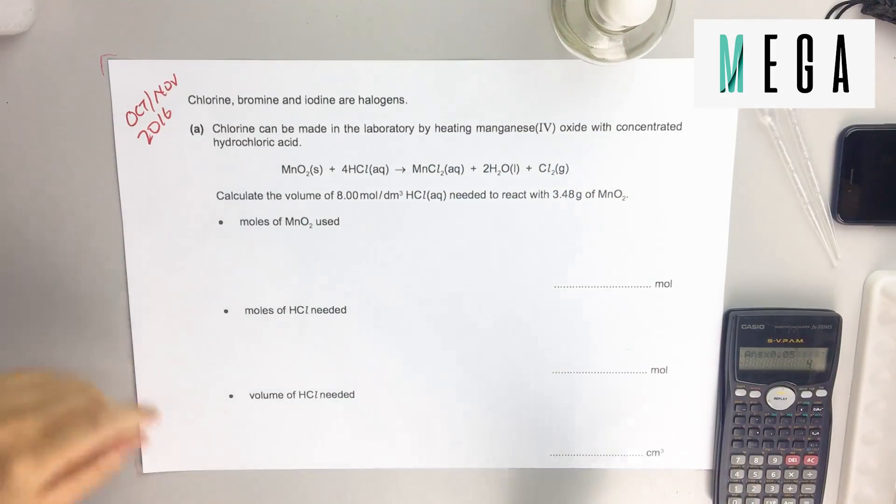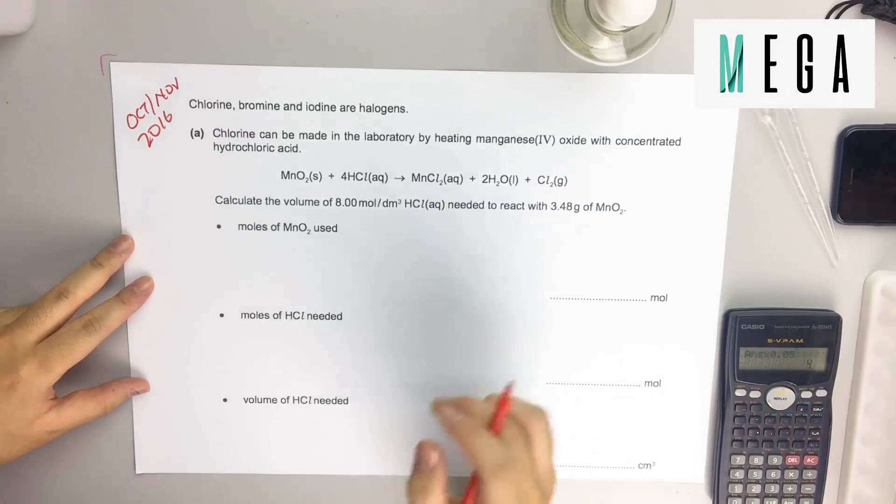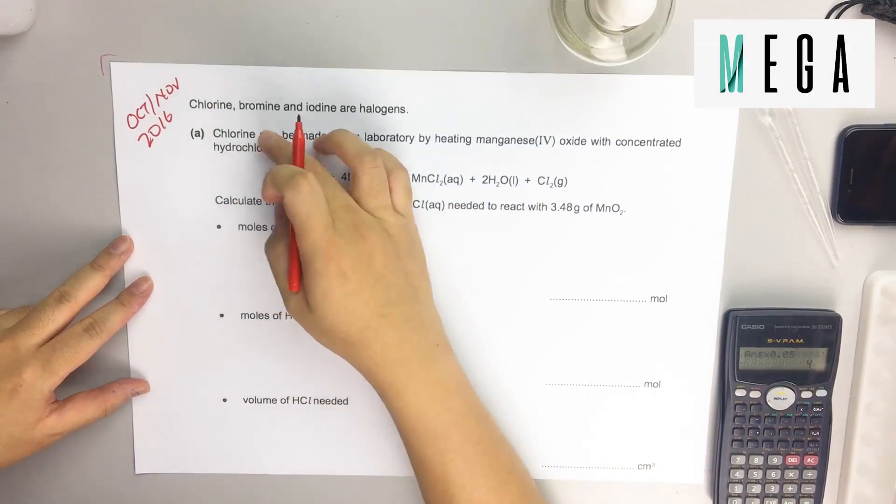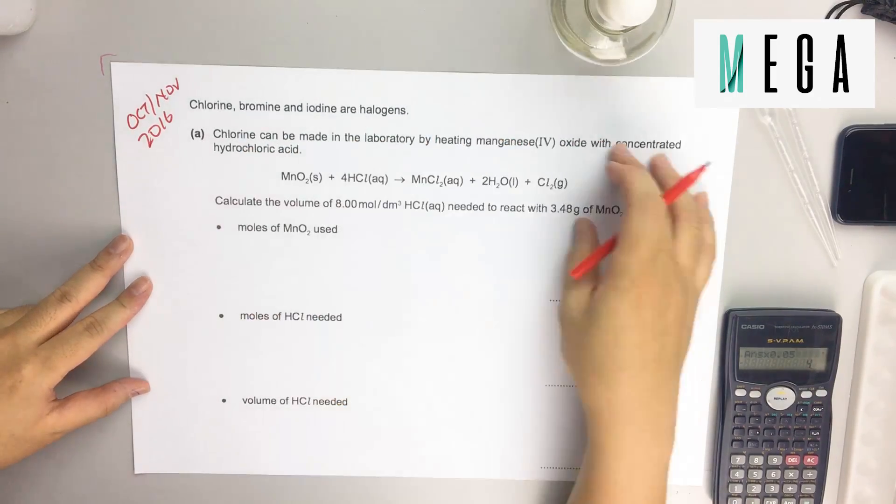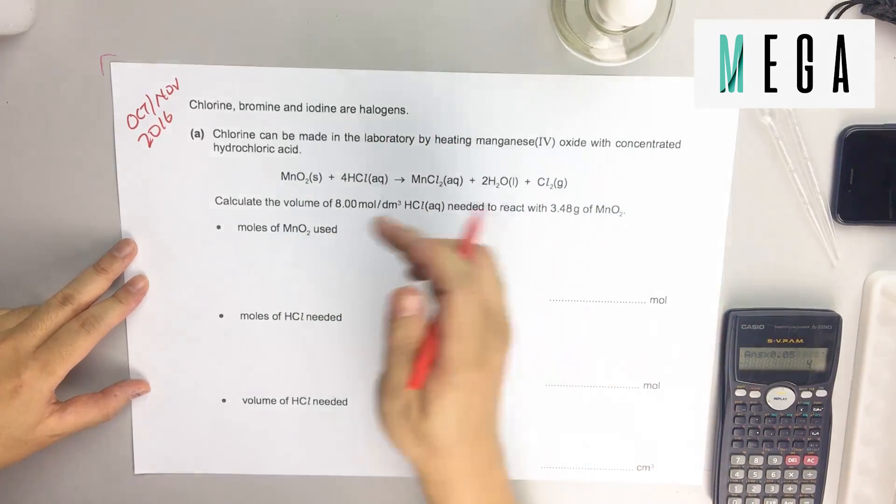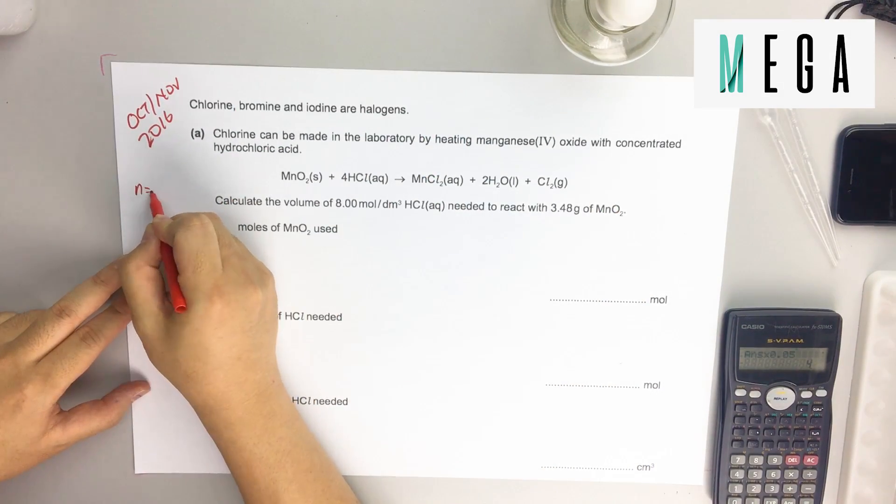Okay, here's another question, very similar, just a little bit different here and there. This is October-November 2016. They always give you very interesting chemicals - same thing, same method, just the chemicals might change. Before we start, it's good to recall the three important formulas.